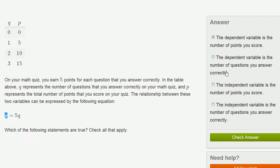The dependent variable is the number of questions you answer correctly. No, we've already talked about that. That's the independent variable. The independent variable is the number of points you score. No, that's not right. That's the dependent variable.